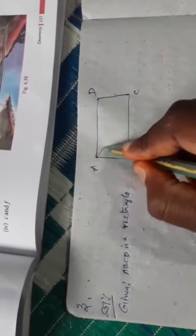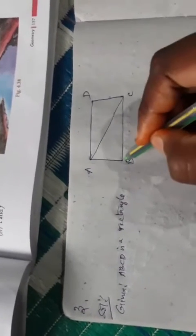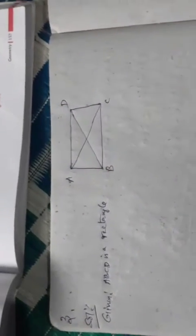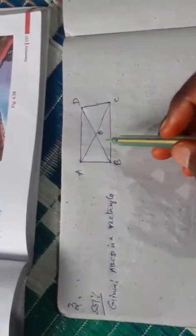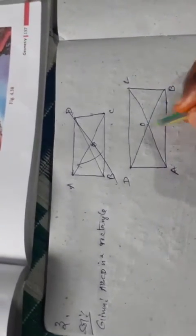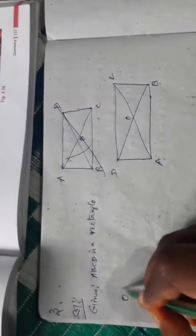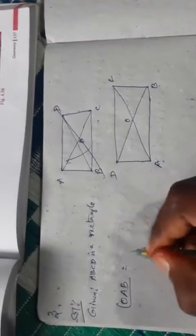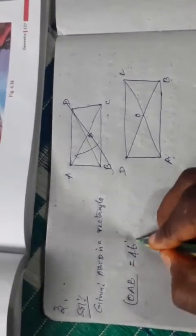Drawing rectangle ABCD with vertices A, B, C, D. Drawing diagonals AC and BD intersecting at point O. Now from the diagram, we can see the given information: angle OAB is given.